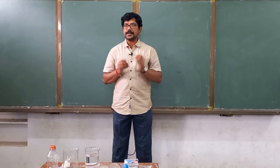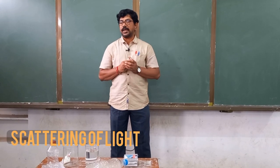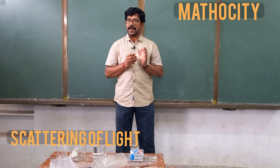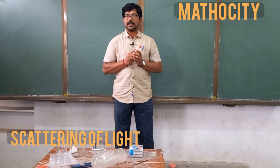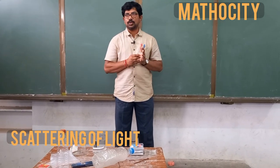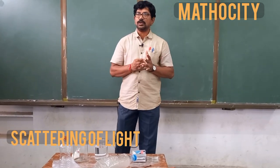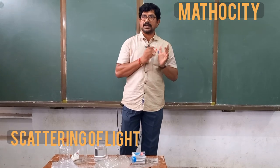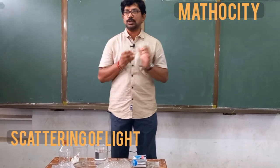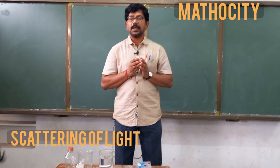Today in this class, I am going to explain what is meant by scattering of light, why the sky is blue, why the sky is red during sunrise and sunset, and why the sky is white during noon time.